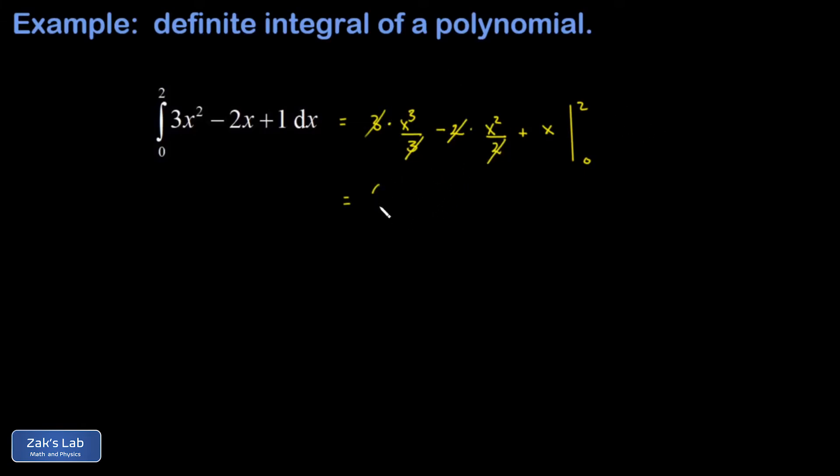When I sub in the upper limit here, I get 2 cubed, that's 8, minus 2 squared which is 4, plus 2.